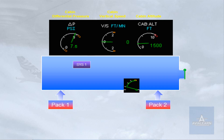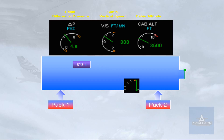If the outflow valve is fully open, a lot of air is allowed to escape. The cabin pressure will decrease, the cabin altitude will climb — positive vertical speed.